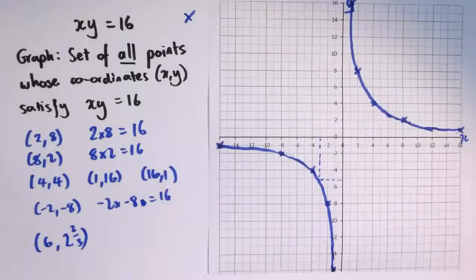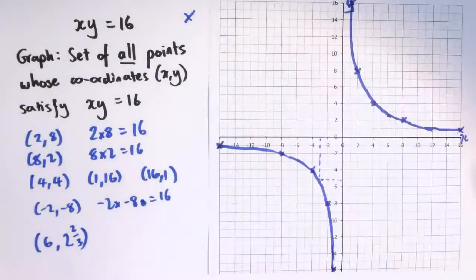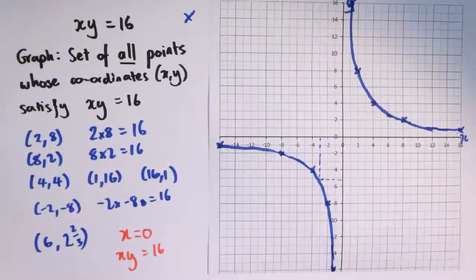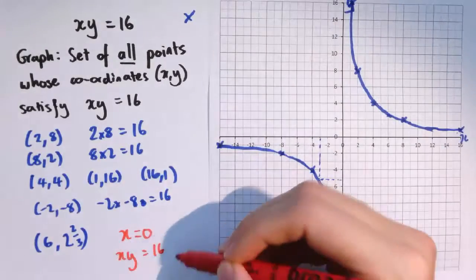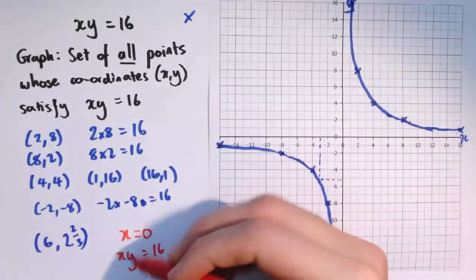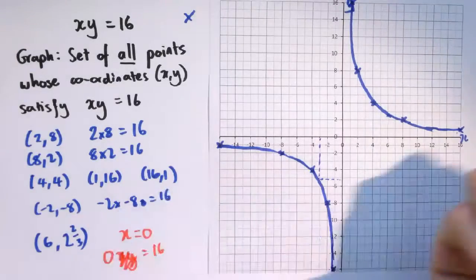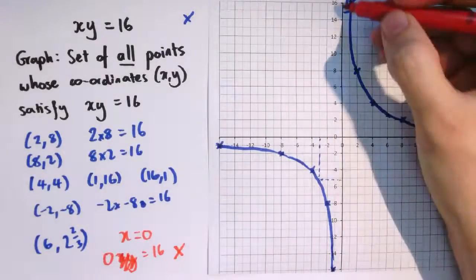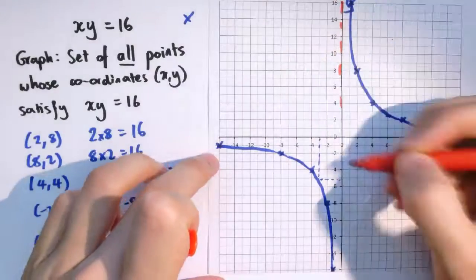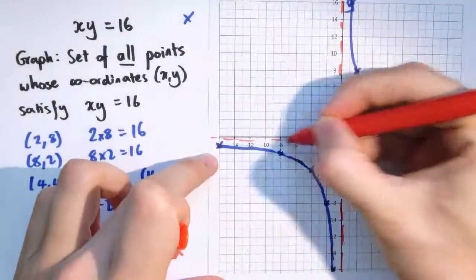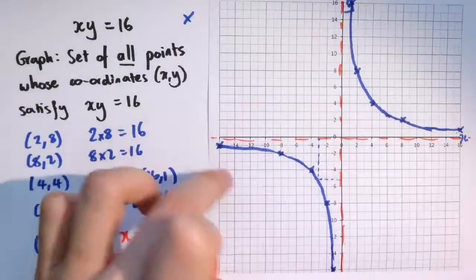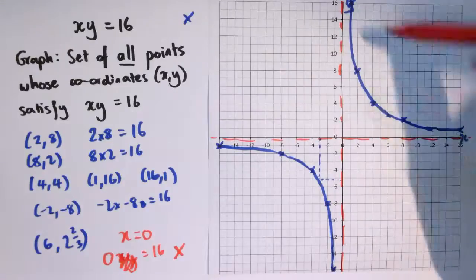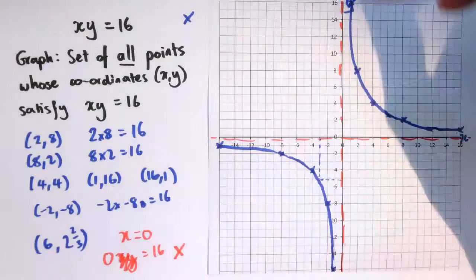Notice a couple of things about this. Firstly, the graph doesn't go through either of the axes here. Because if I tried to put x equals 0, then if I was looking for a value that still had x times y equals 16, 0 times anything is 0, so it would have 0 equals 16, and that doesn't work. So there's no point with x equals 0. And similarly, there's no point with y equals 0. The important point is that the graph is the set of all of these points, the whole number ones we found and all the ones in between joined by a smooth curve.